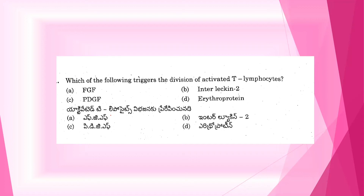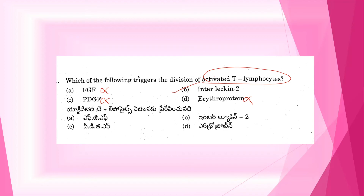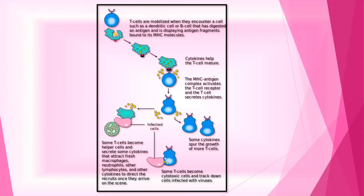This is an easy question. If you have good immunology knowledge, it will be easy to solve. I will place the link to immunology videos in the description box. Please do watch them for better understanding. Here, three options are easy to eliminate. FGF is fibroblast growth factor, which has no relation with T lymphocyte activation. The correct option is B, that is Interleukin-2.